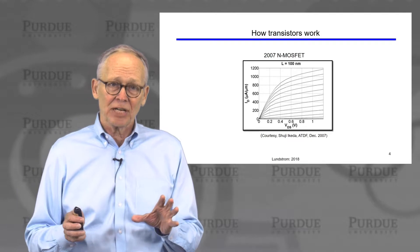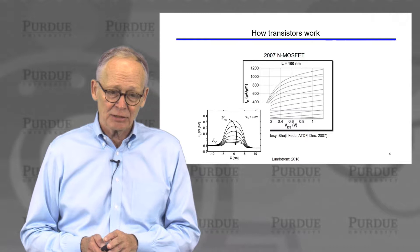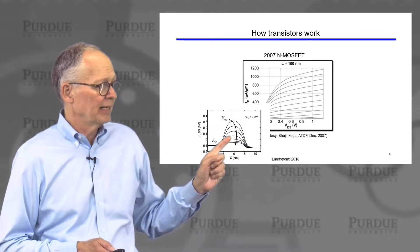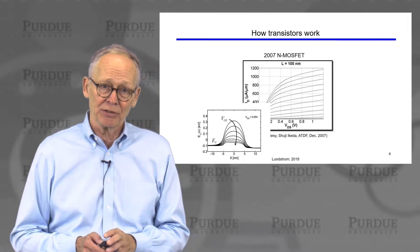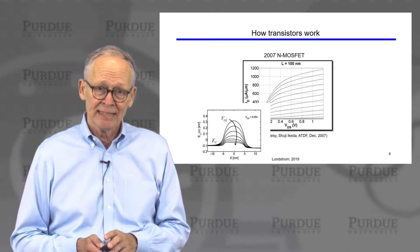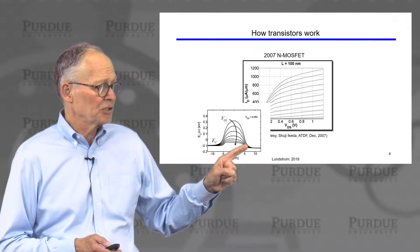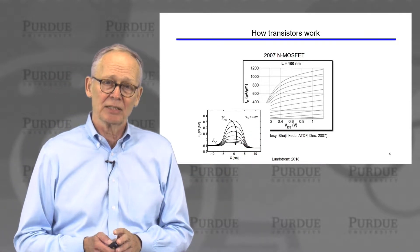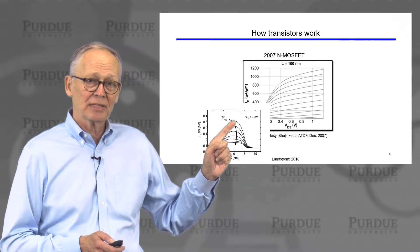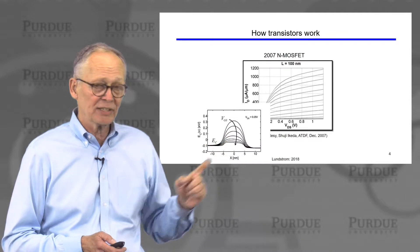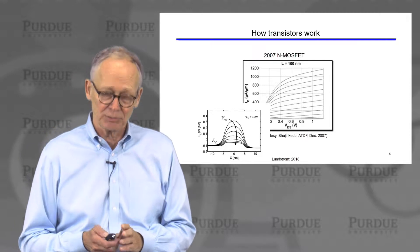How transistors operate in terms of energy band diagrams is a very simple story. In the linear regime, we recognize that when we draw the energy band diagram, there is a potential energy barrier for electrons between the source and the drain. That barrier is in the channel. We apply a small voltage to the drain and pull the conduction band in the drain down a little bit. Then the gate voltage, a positive gate voltage, lowers the energy as we push the barrier down. More and more current flows, and we get the linear regime current.